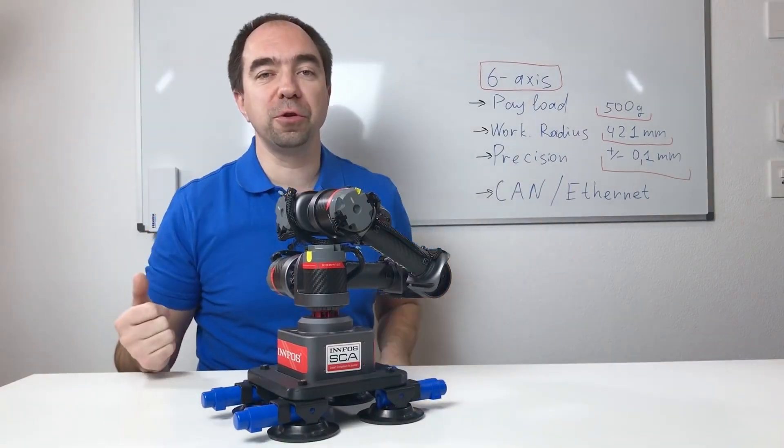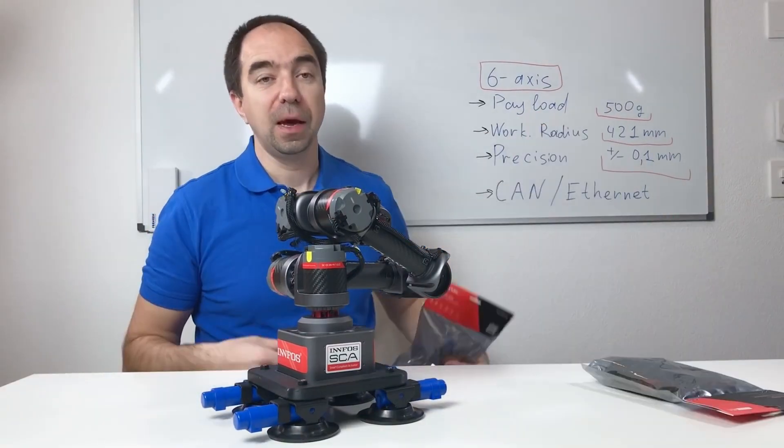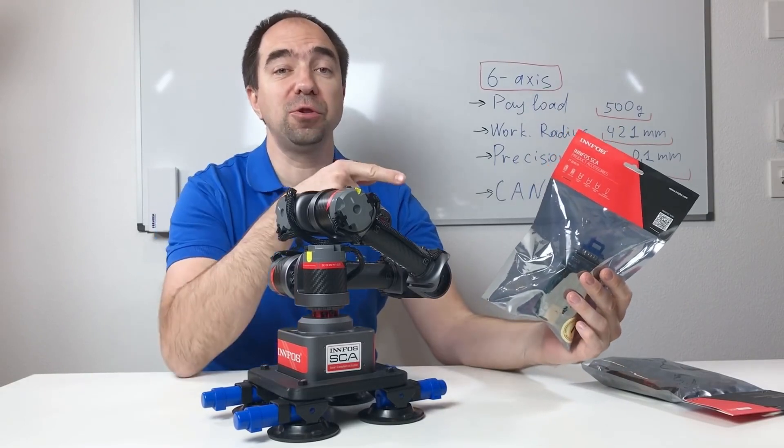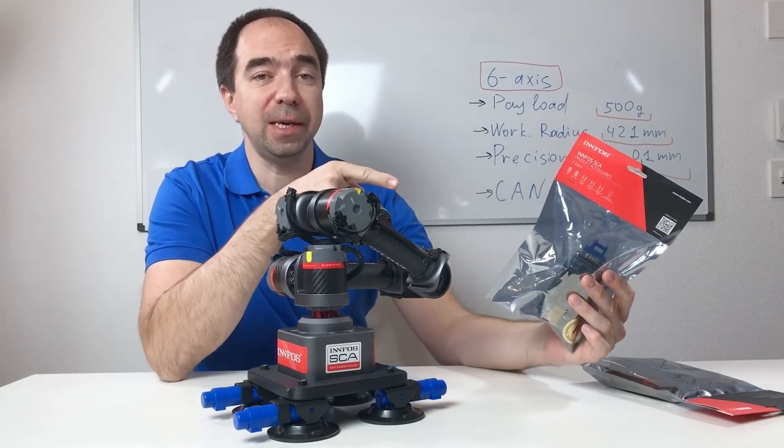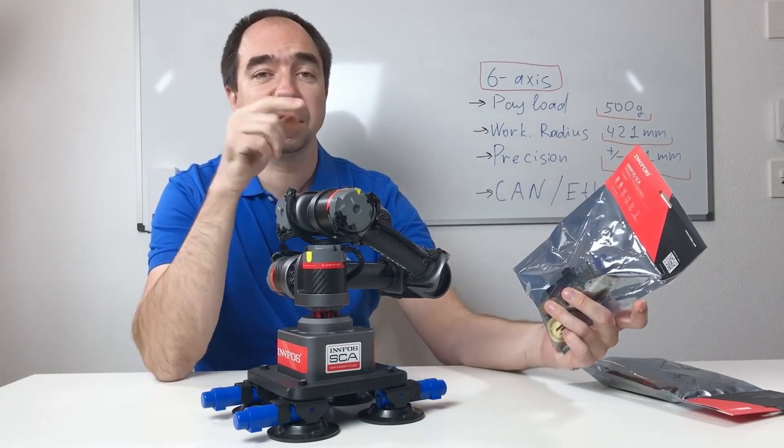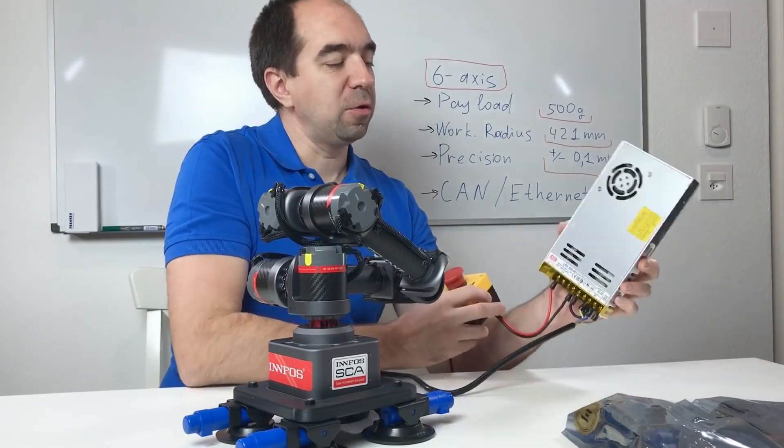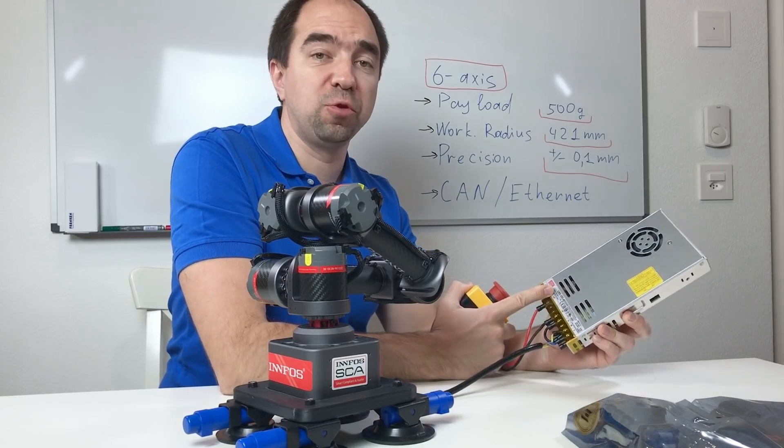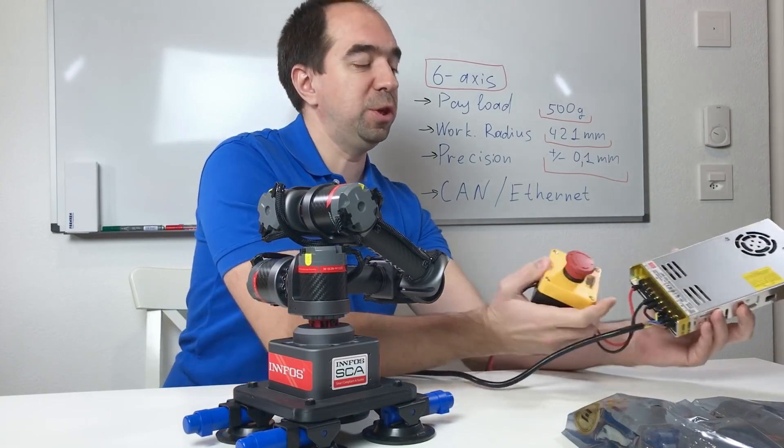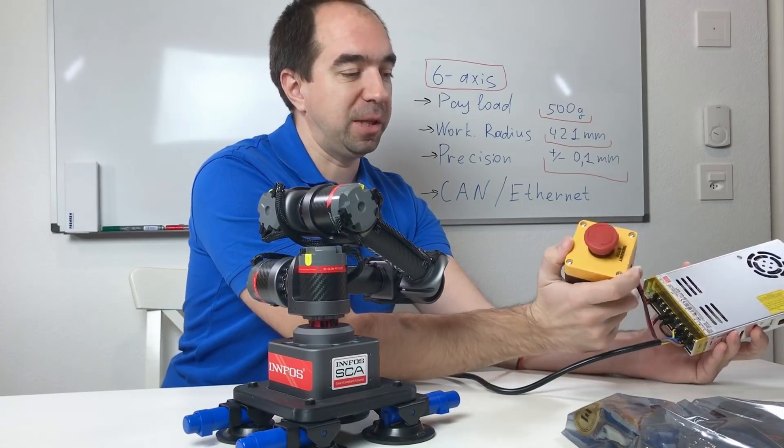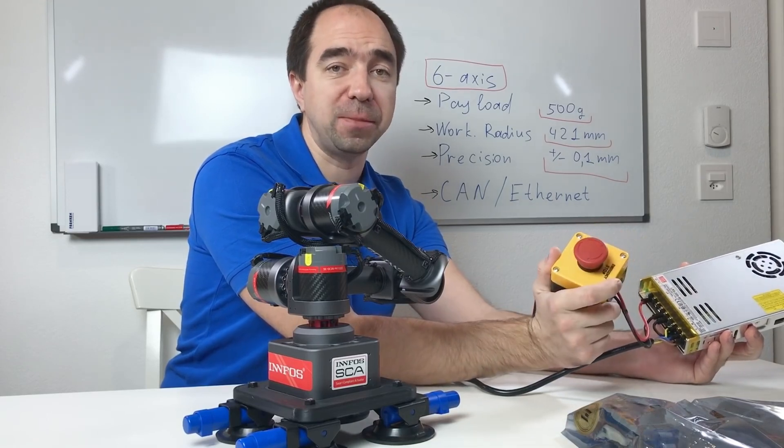With this robot I also got the cables and the electronics. This electronics converts the CAN bus to ethernet. Like this we can easily connect this robot to the computer. And I also have this power supply, 42 volts power supply, to which is connected this emergency button. Like this we can stop the robot if something goes wrong.